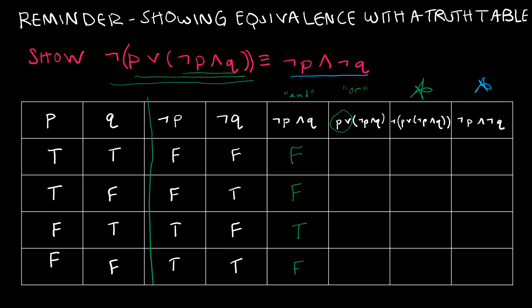Now I'm going to take that new column I just created and I'm going to say P or that new column I just created. So I'm looking at P and the new column and one of them has to be true for me to put a true. So in this row I have a true so I get a true, and in this row I have a true so I get a true, and in this row I have a true so I get a true, but in this row I've got two falses so I get a false.